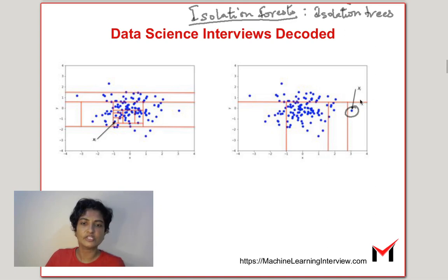So, this is an example of anomalous point here. An anomalous point is going to be isolated much sooner. In this case, we had to make one partition, two partitions, three partitions and after the fourth partition, we have been able to isolate this point as opposed to a regular point. This is a point somewhere in the middle of the data set and in order to isolate this, we have to make a lot of partitions.